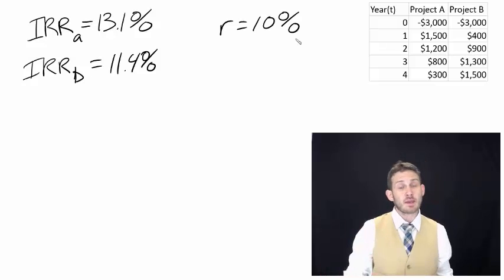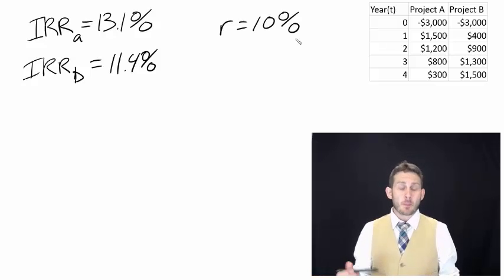If they're mutually exclusive, we cannot do both of them. We should do Project A, because Project A has a higher rate of return. As investors, as managers, as companies, we're always seeking the most money possible.